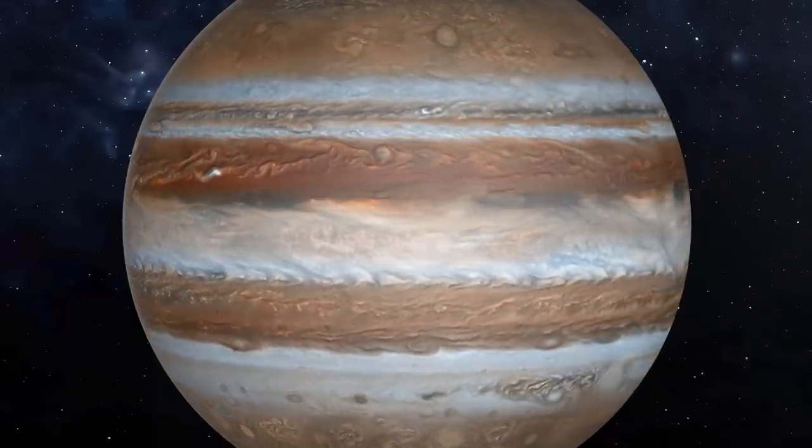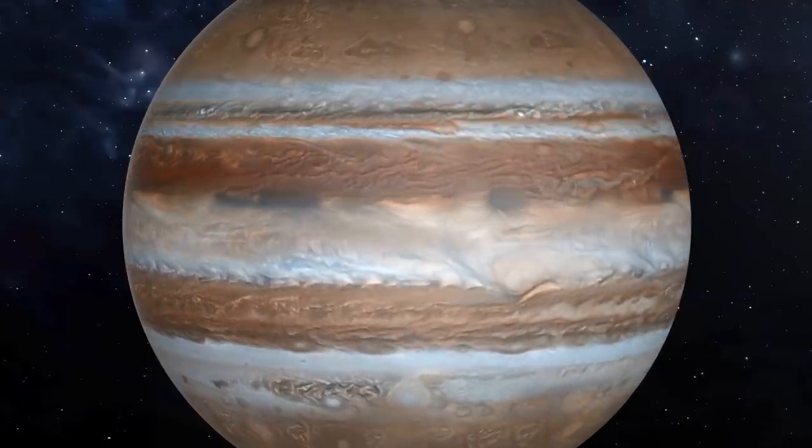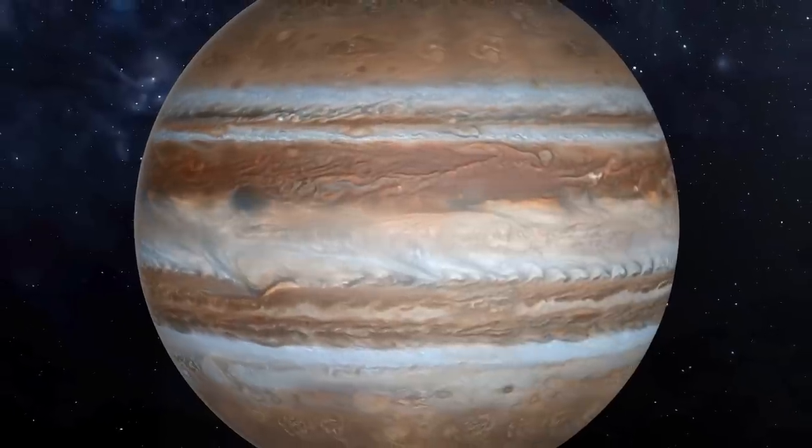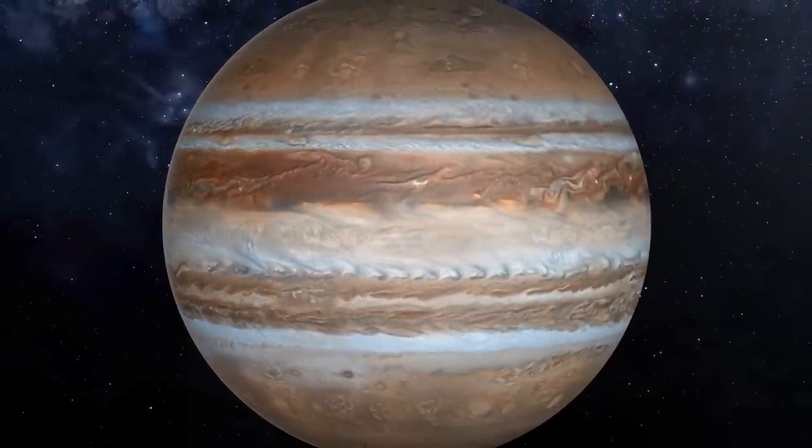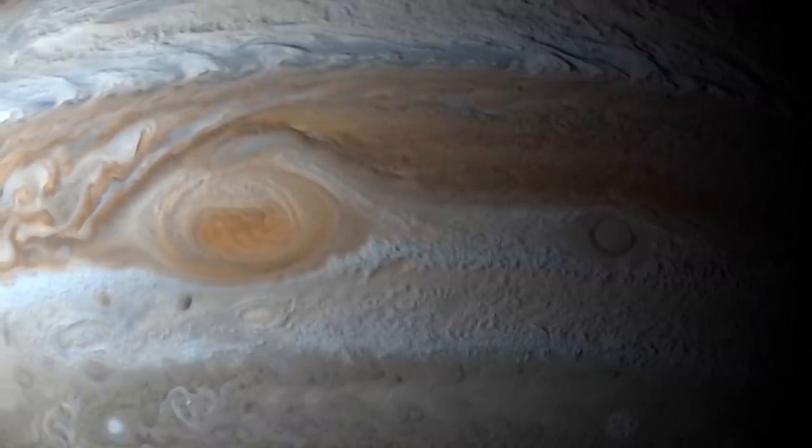Jupiter is the fifth planet of the solar system, but this ranking takes into account the distance of the planets from the Sun, because Jupiter is the largest planet in our system by its size. By itself, it represents a size greater than all the other planets of the solar system, combined.